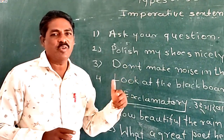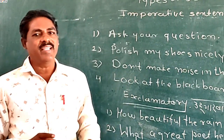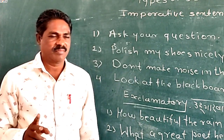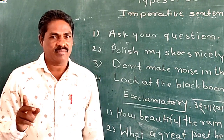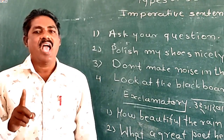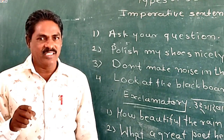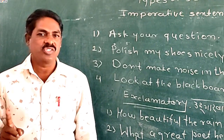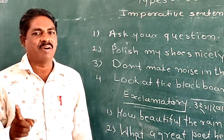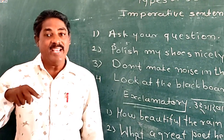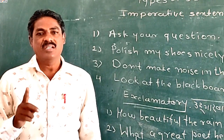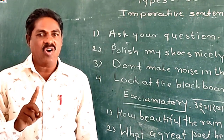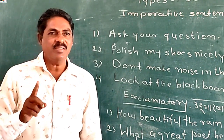Now we are going to learn the next topic, that is exclamatory sentences, or Udgaar Vaakya. Do you know what exclamatory sentences means? An exclamatory sentence is a statement that expresses strong feelings or emotions. Typically in English grammar, an exclamation sentence ends with an exclamation mark. Generally, exclamatory sentences start with 'what' or 'how'.